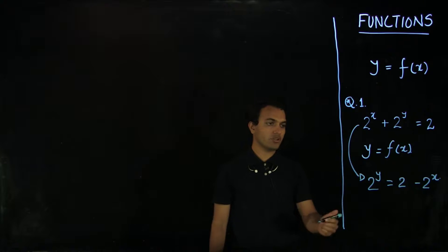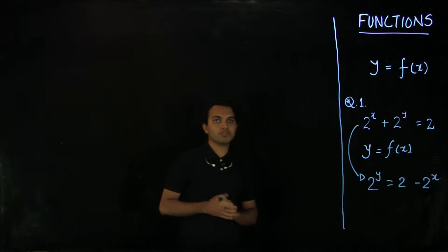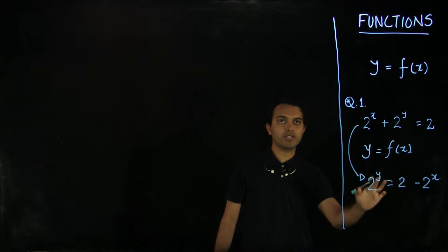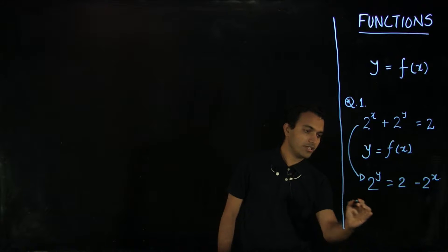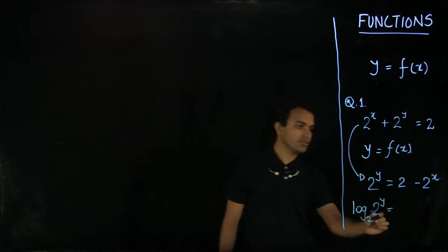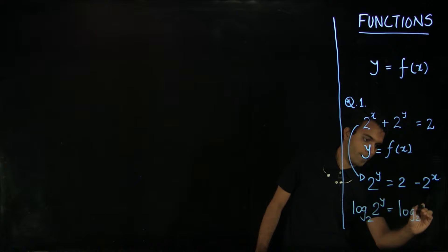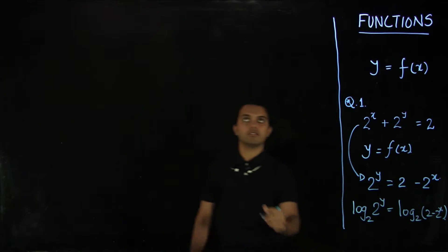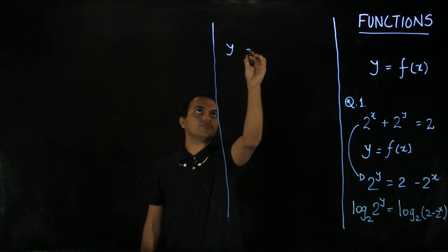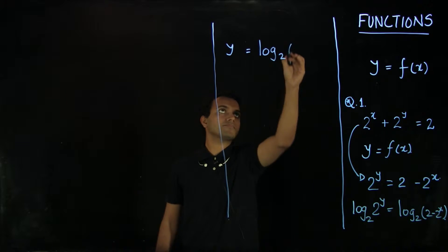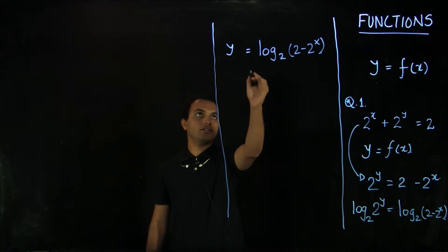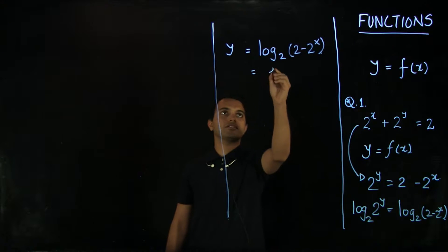One way to isolate y is through logarithms. In case you do not know about logarithms, do not worry — we will know more about them soon. Essentially, logarithms are an operation by which we can get the exponent of an expression. We take log on both sides with base 2. This gives us y, and now we have a function in the form y = f(x).